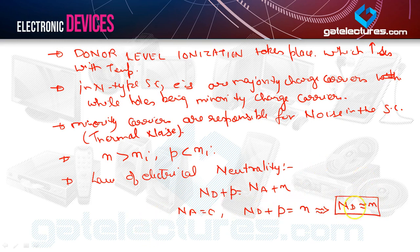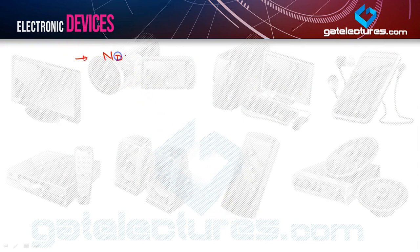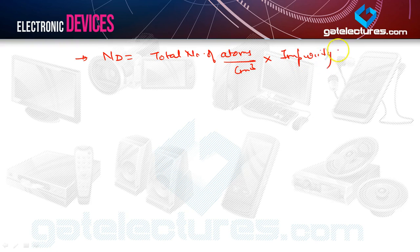Following the law of electrical neutrality, for any semiconductor: ND + P = NA + N. For N-type, we can neglect the hole concentration, so we approximate ND ≈ N. Since electrons are the majority charge carriers and dominate the concentration of holes, for an N-type semiconductor, ND is approximately equal to N. The doping concentration ND equals the total number of atoms per centimeter cube multiplied by the impurity ratio.